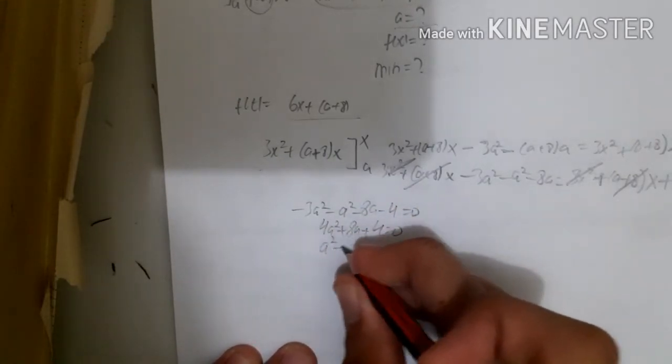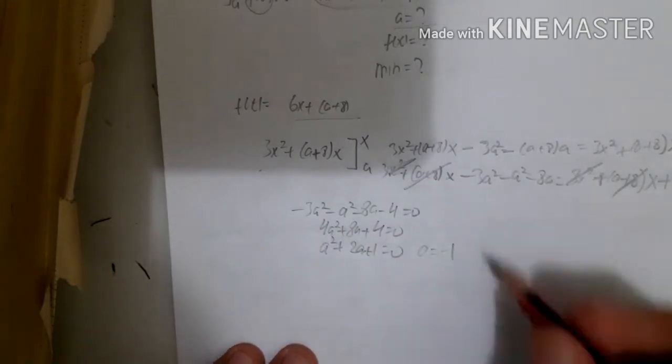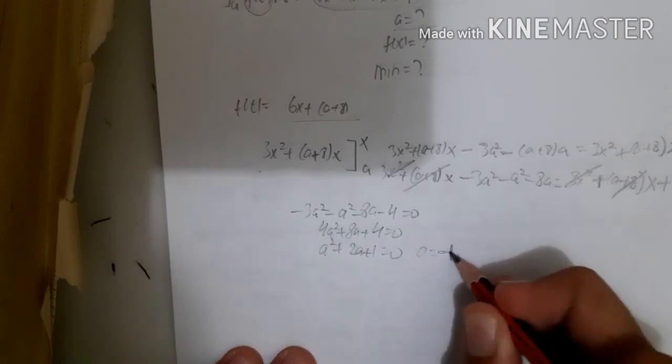So a² + 2a + 1 = 0, which means a = -1. So a is -1.